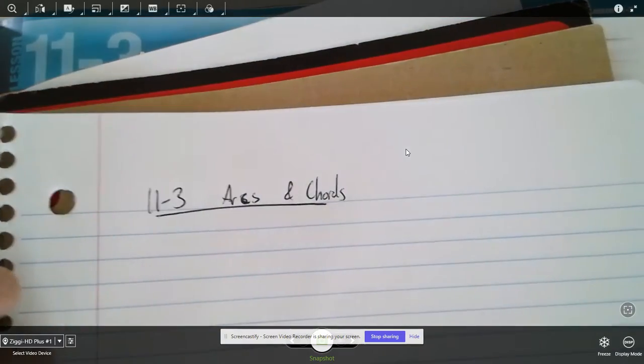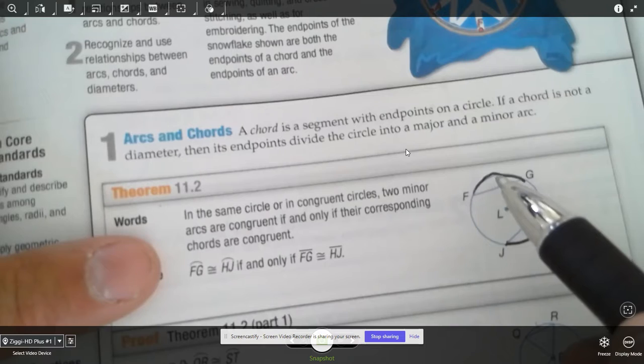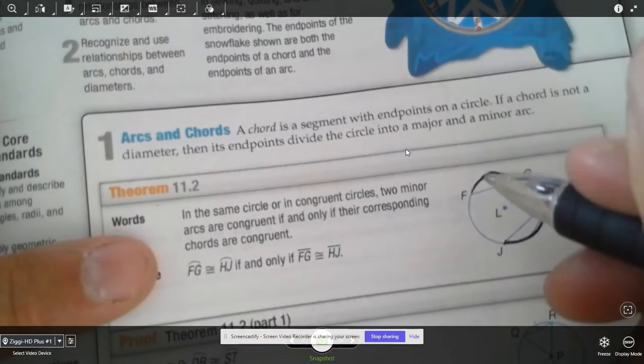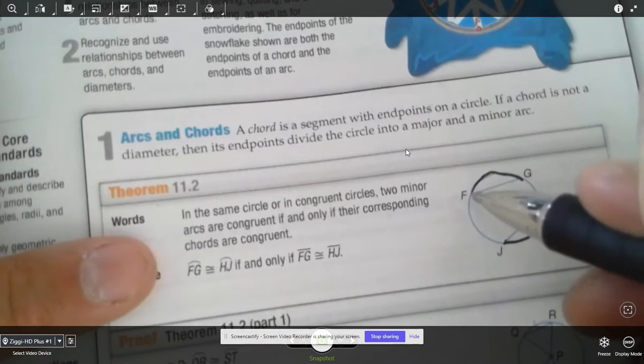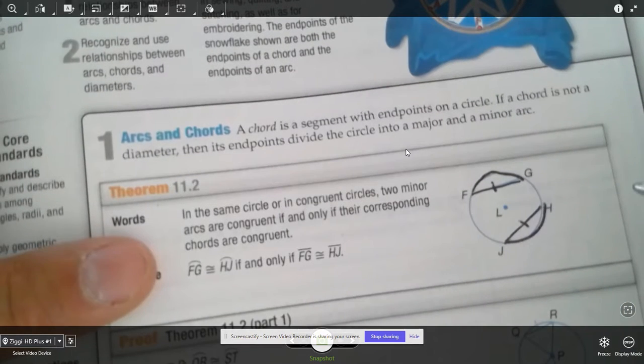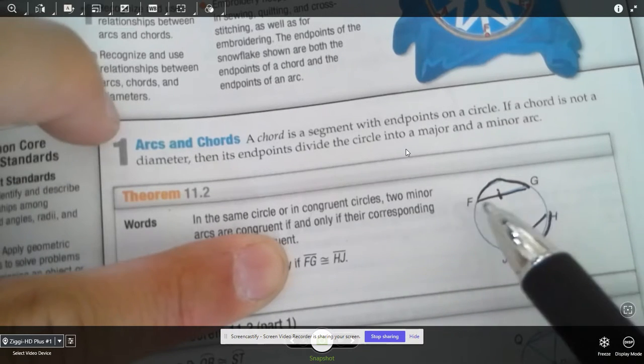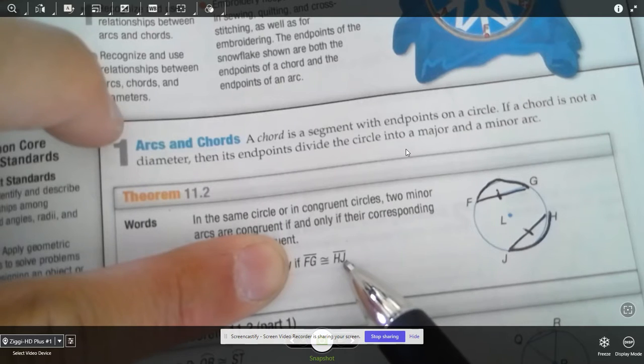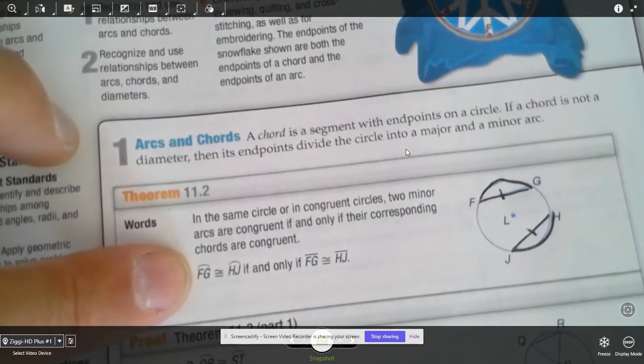And the first thing that you want to learn is this. This is really simple. If you have the same circle and you draw two arcs that are the same, or two chords that are the same, if these two chords are congruent, guess what? Their arcs will actually be the same in value.